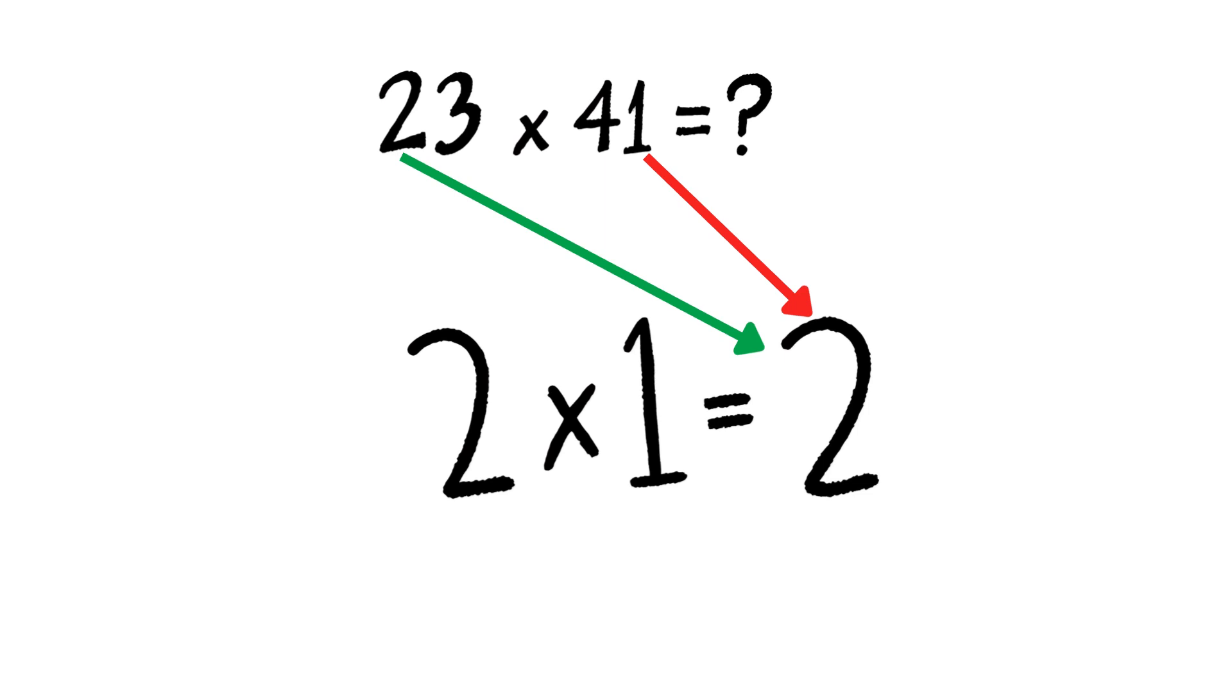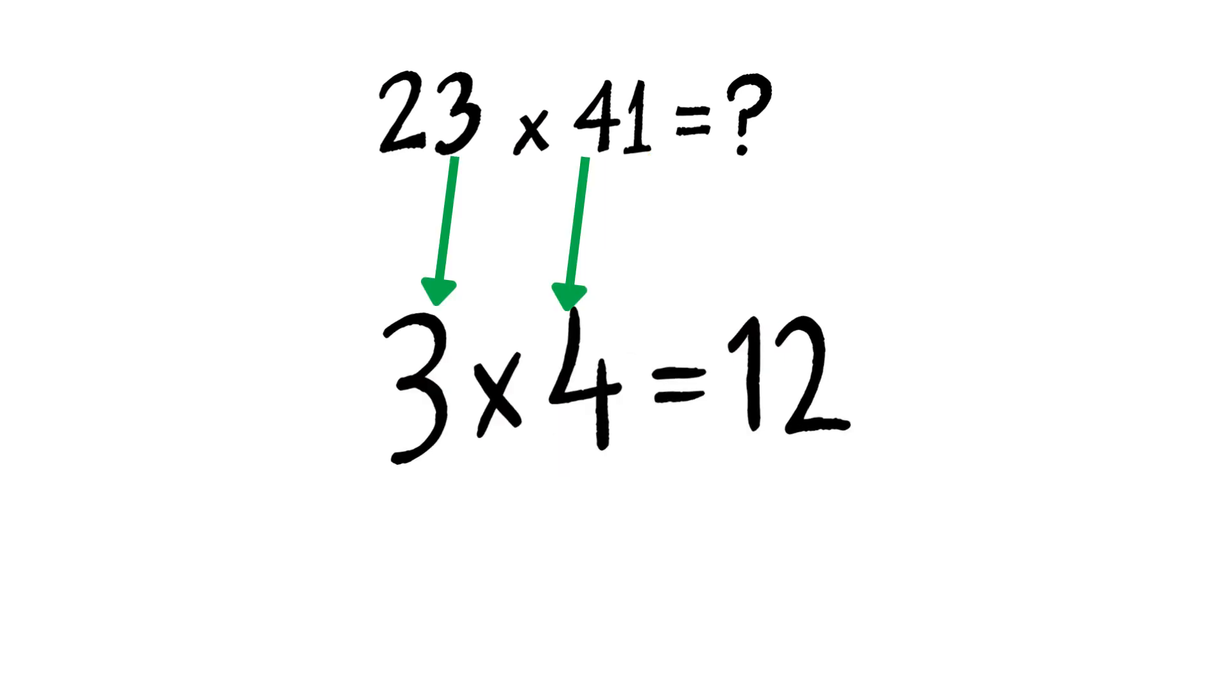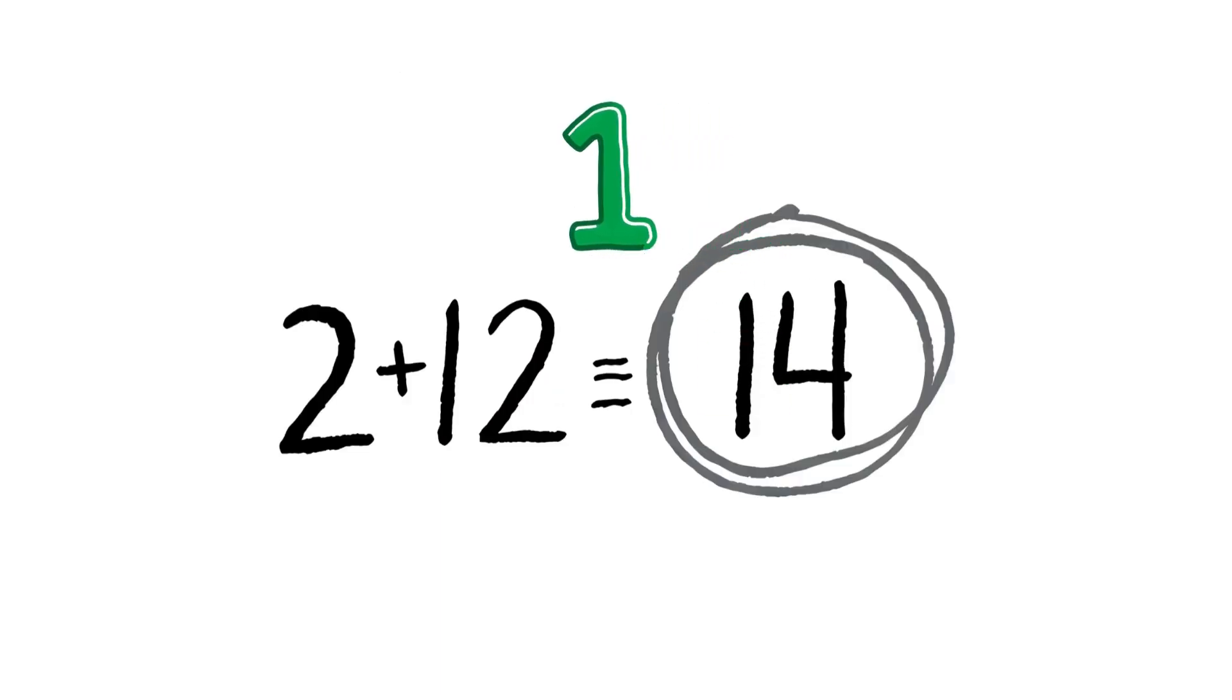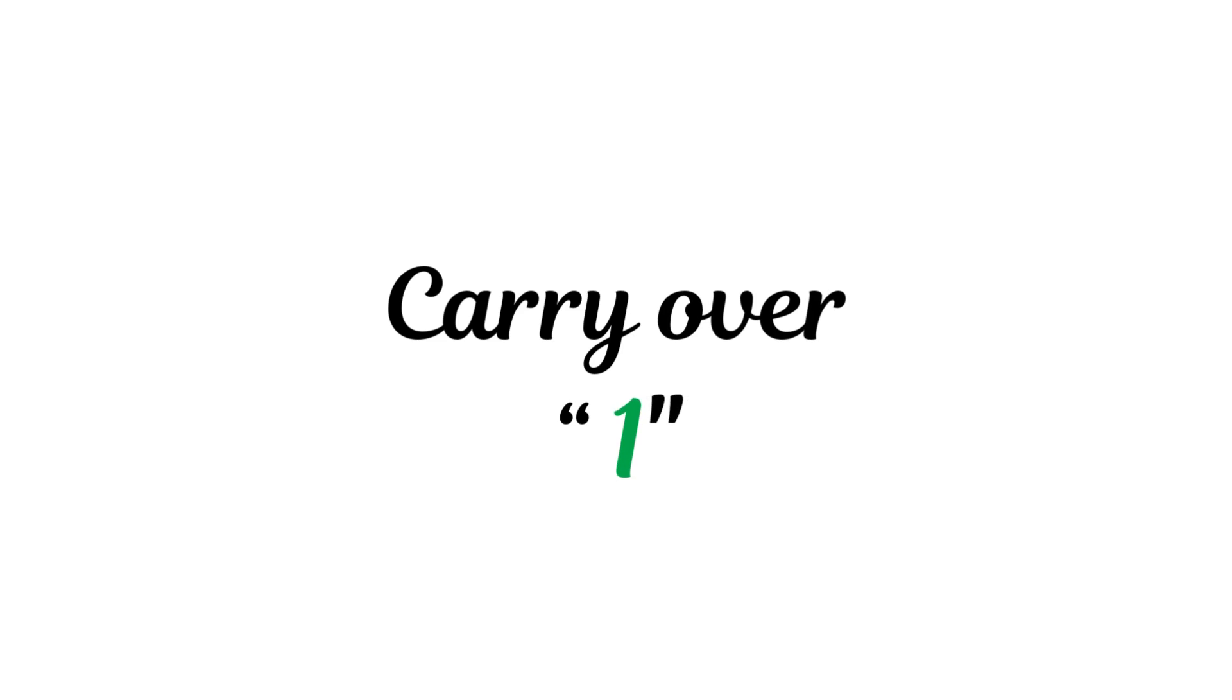First, two times one is two. Next, three times four is twelve. Now, add them up. Two plus twelve gives us fourteen. We'll write down the four in our answer, and we'll carry over the one.